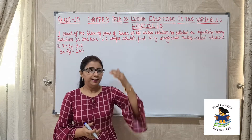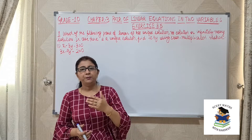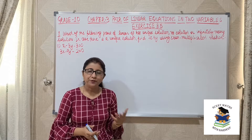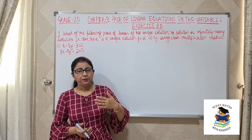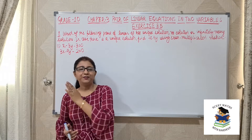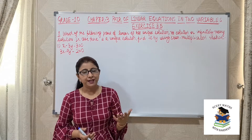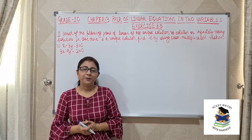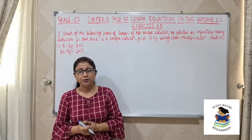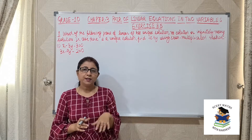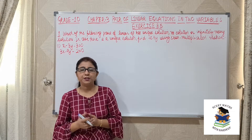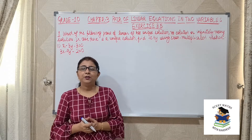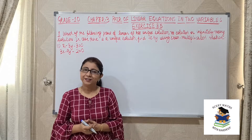From that topic, we already know that if a1/a2 equals b1/b2 equals c1/c2, then the pair will have infinitely many solutions. If a1/a2 equals b1/b2 but not equal to c1/c2, then there is no solution. But if a1/a2 is not equal to b1/b2, then we will have a unique solution. First we apply this concept to check which category our given pair falls into, and if it has a unique solution, we use cross multiplication to solve it.